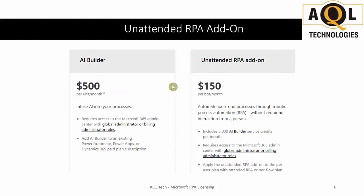For Power Automate unattended RPA, adding this to either of the two base plans costs $150 per bot per month. This add-on allows RPA to run autonomously, independent of a user. Unattended bots can be deployed on a local or remote desktop or other virtualized environments.